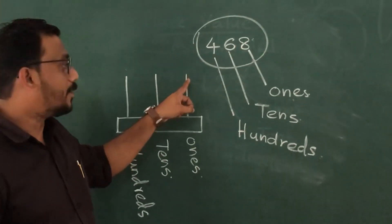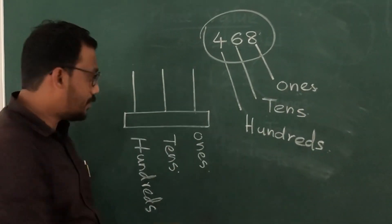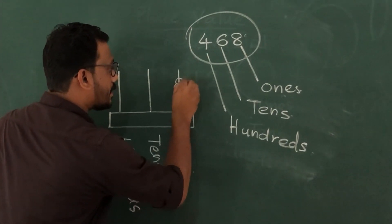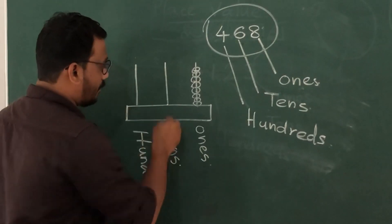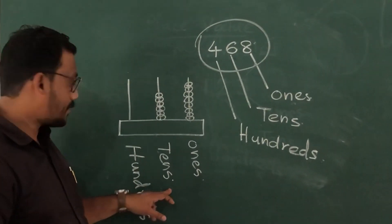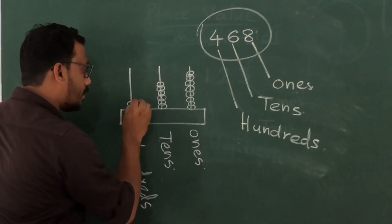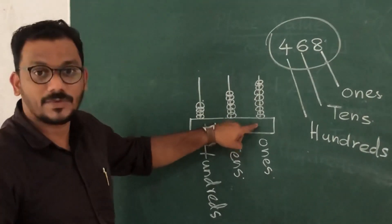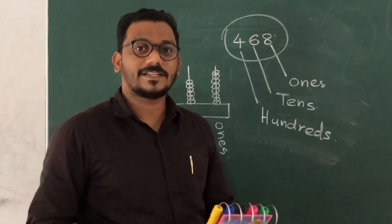We can write 468 in this abacus. Here eight ones — we draw eight beads: one, two, three, four, five, six, seven, eight — eight ones. Then how many tens? Six tens — one, two, three, four, five, six — six tens. Then in the hundreds place, four hundreds — one, two, three, four. So four hundreds, six tens, and eight ones make four hundred sixty-eight.